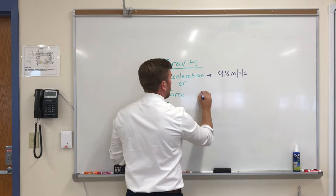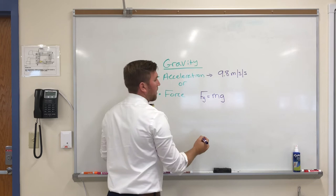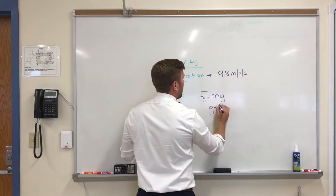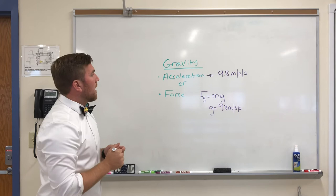What we'll find later on is that gravitational force is going to be equal to mass times g. And in this case, and in most cases on the planet earth, g is going to be 9.8 meters per second per second.